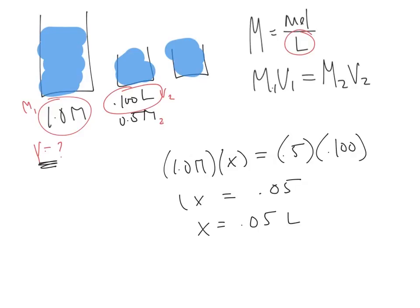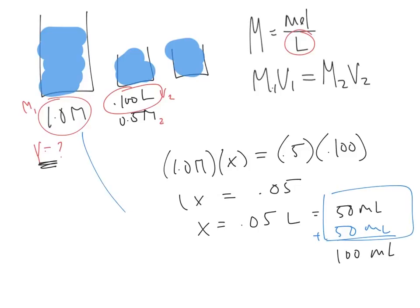So what this means is in order to get a concentration of half a molar, I need to take 50 milliliters - 0.05 liters is 50 milliliters - and dilute it to 100 milliliters. So my total is going to be 100 milliliters.